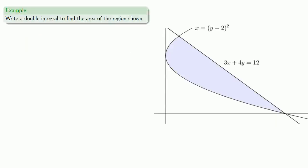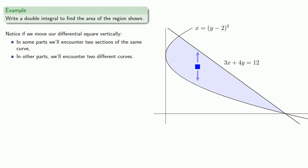For example, let's try to write a double integral to find the area of the region shown. And the first thing to notice is that if we move our differential square vertically, in some parts we'll encounter two sections of the same curve, and in other parts we'll encounter two different curves. And this makes things hard. We might have to do this, but let's see if we can avoid it.